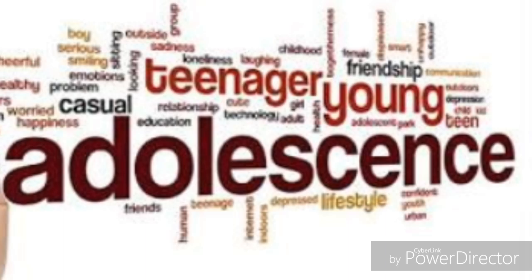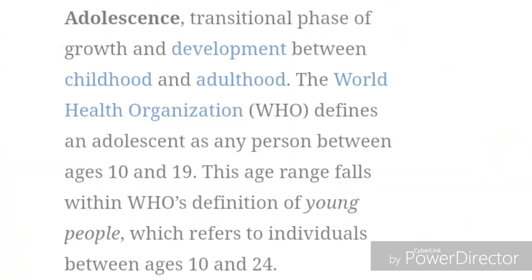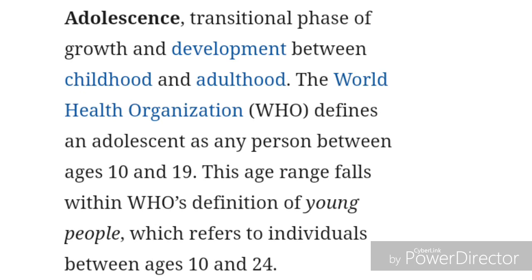Adolescence is the period of teenage between 13 to 19 years according to World Health Organization. Adolescence is the transitional phase of growth and development between childhood and adulthood. The World Health Organization defines Adolescence as the period between 10 and 19 years of age. It is teenage.